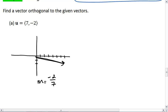So if the slope of our original vector is negative 2 sevenths, then the slope of our new vector needs to be 7 halves. Which means our new vector should go up 7 and over 2.